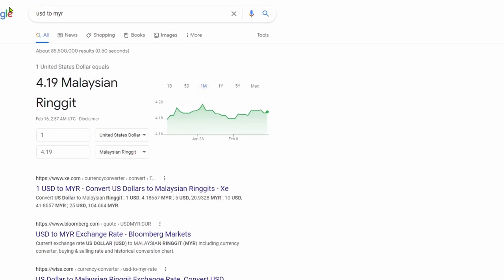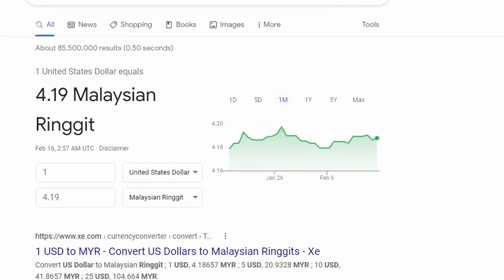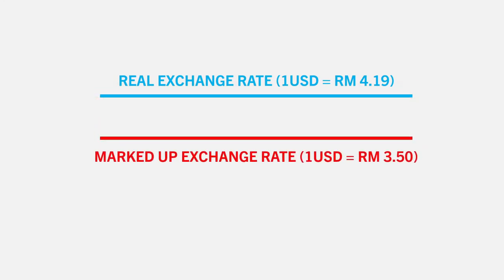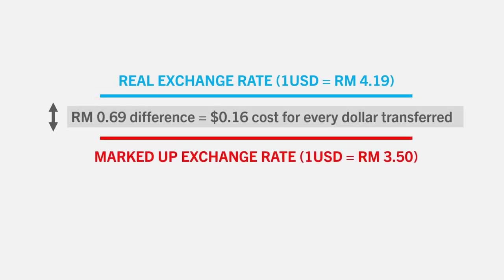For example, let's look at the exchange rate between the US dollar and Malaysian ringgit right now. The exchange rate is one USD to four ringgit and 19 cents — this is the real exchange rate. What I meant by markup is that these banks will offer you something less than the real exchange rate. The difference — they are taking it as profit for themselves, or you can think of it as fees that you have to pay for them to do this international transfer.